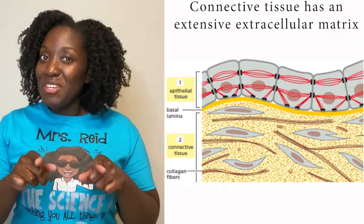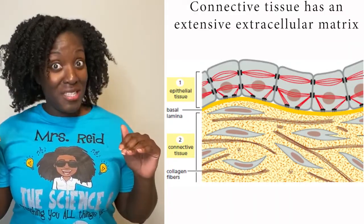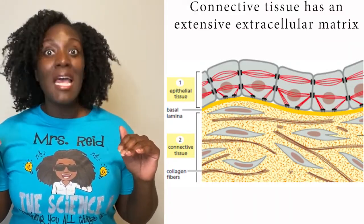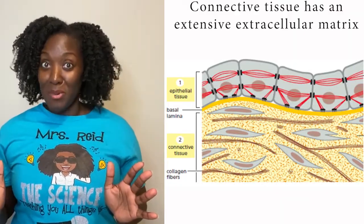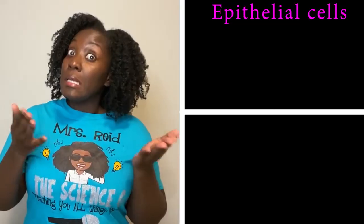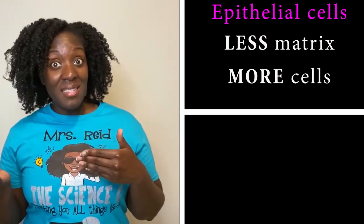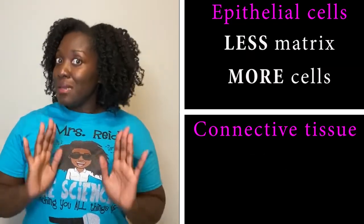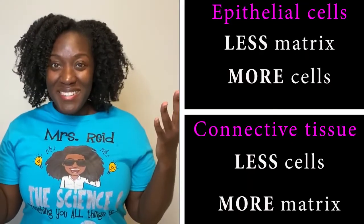The basement membrane is the connector between epithelial cells and connective tissue. Connective tissue, on the other hand, has a lot of extracellular matrix filled with protein fibers. The takeaway: epithelial cells have less matrix and more cells, while connective tissue has less cells and more matrix. The matrix is so important because it determines the tissue's structure and function.